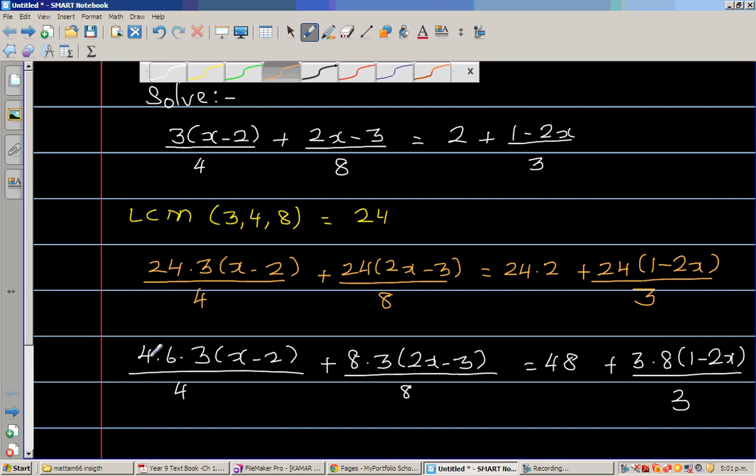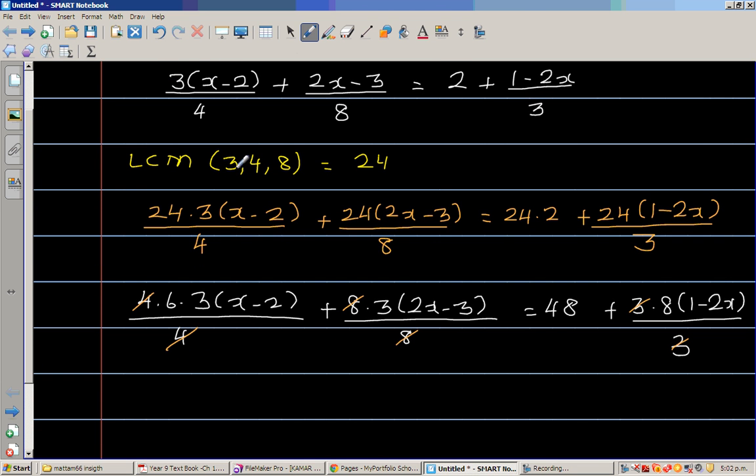So what happens is 4 and 4 gets cancelled, 8 and 8 gets cancelled, and 3 and 3 gets cancelled. So what remains is that you will not have the denominators.